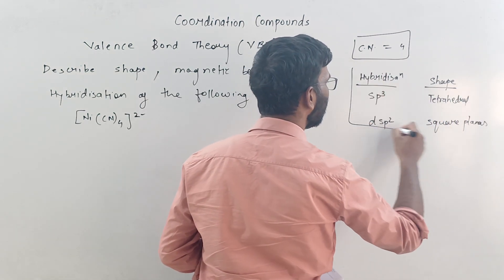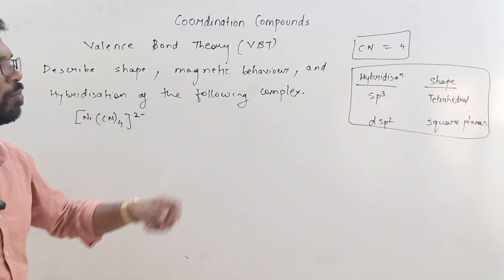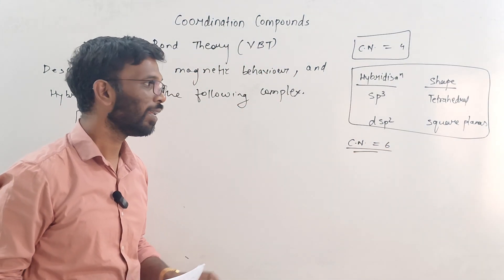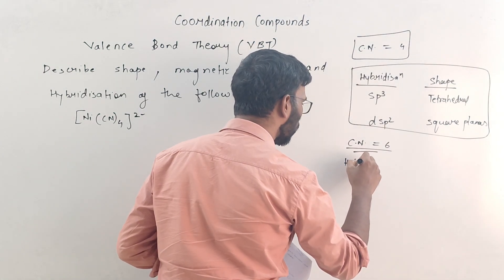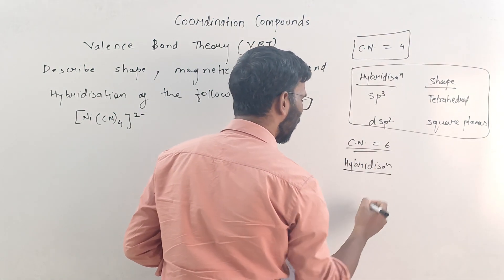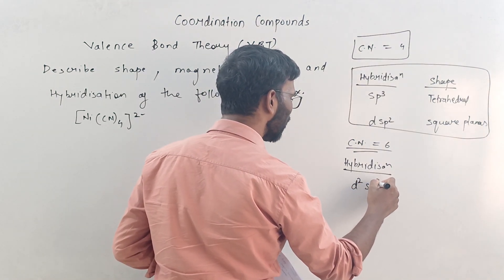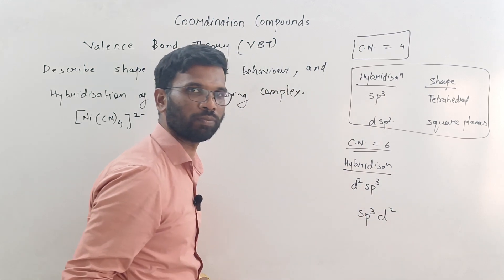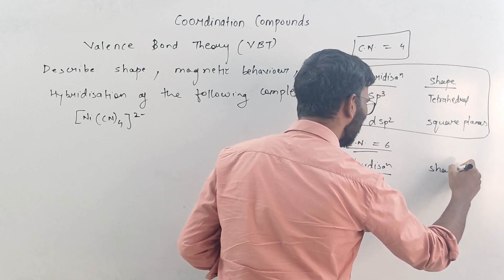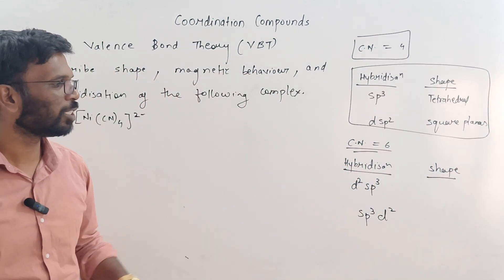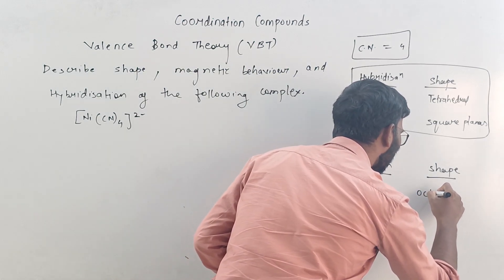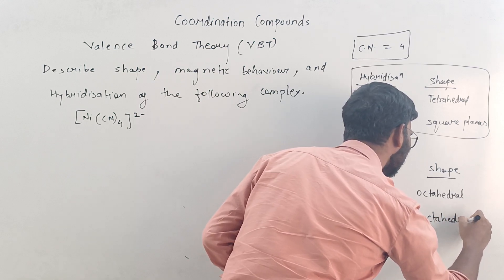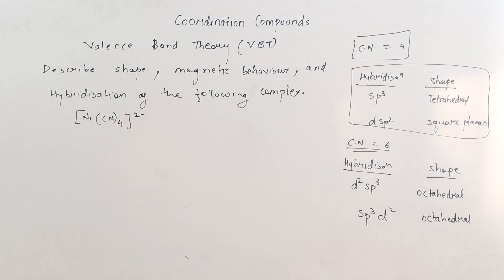When coordination number is 6, there are two possible hybridisations: one is D2SP3 and the other is SP3D2. But the shape doesn't matter — whether it is D2SP3 or SP3D2, the shape will always be octahedral.